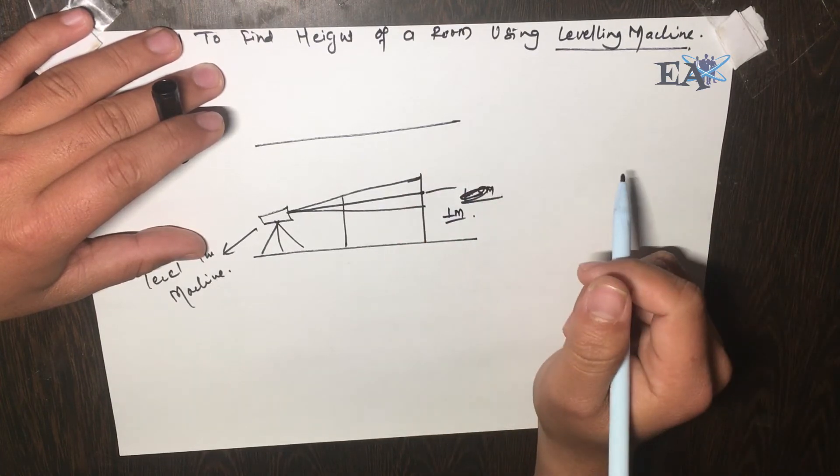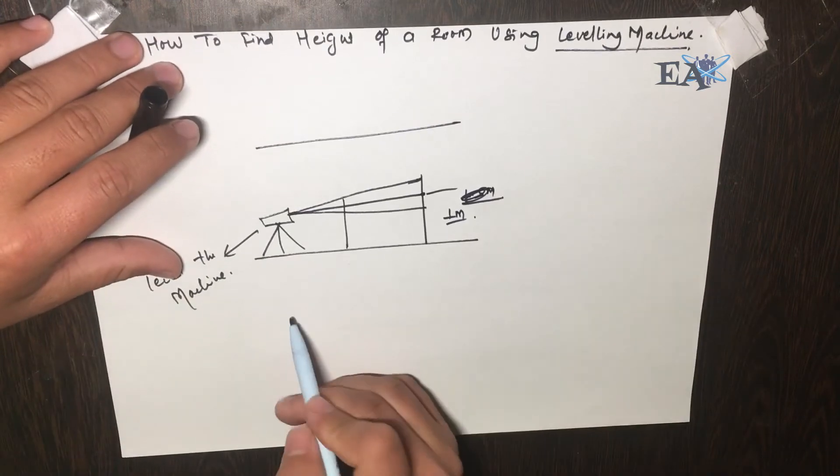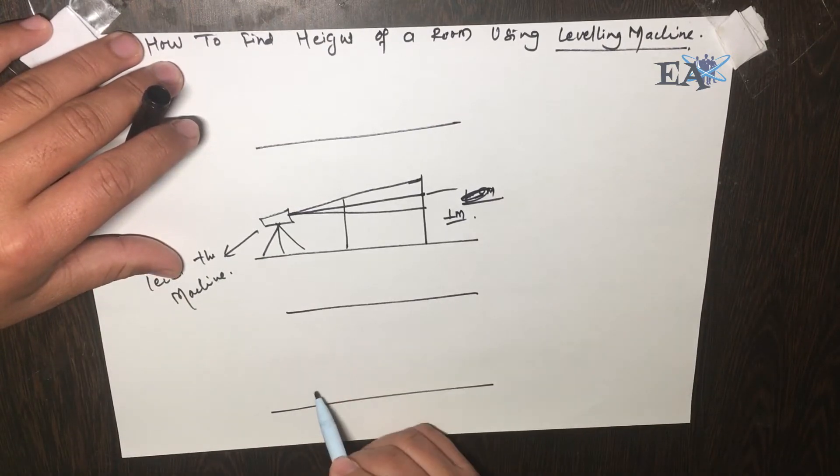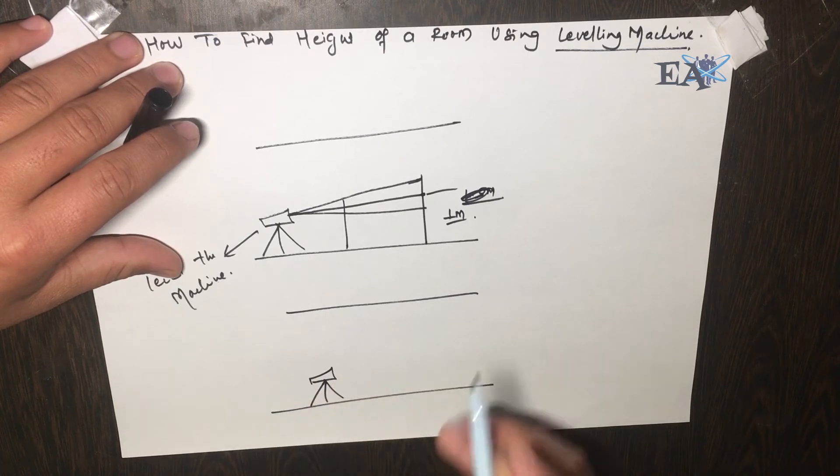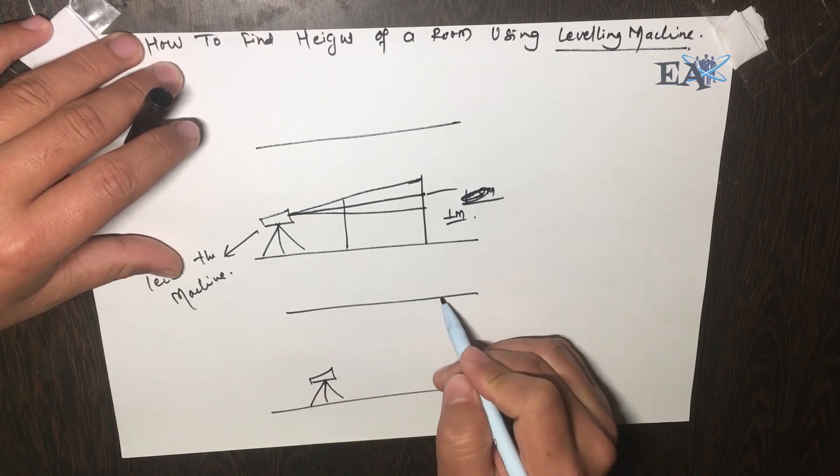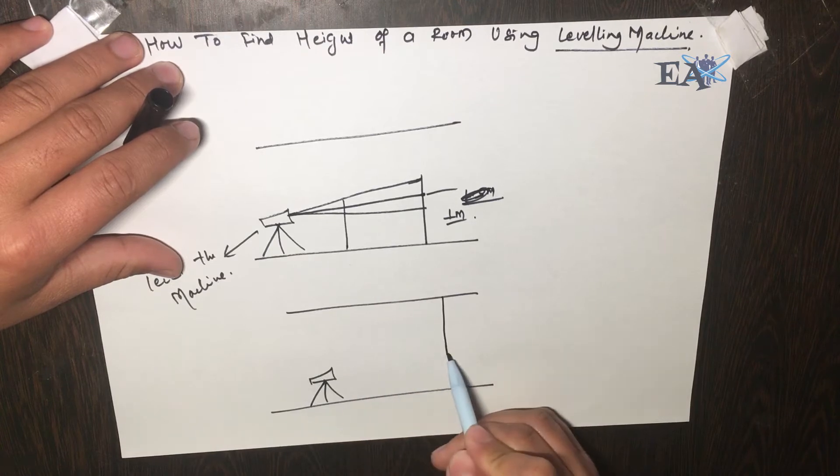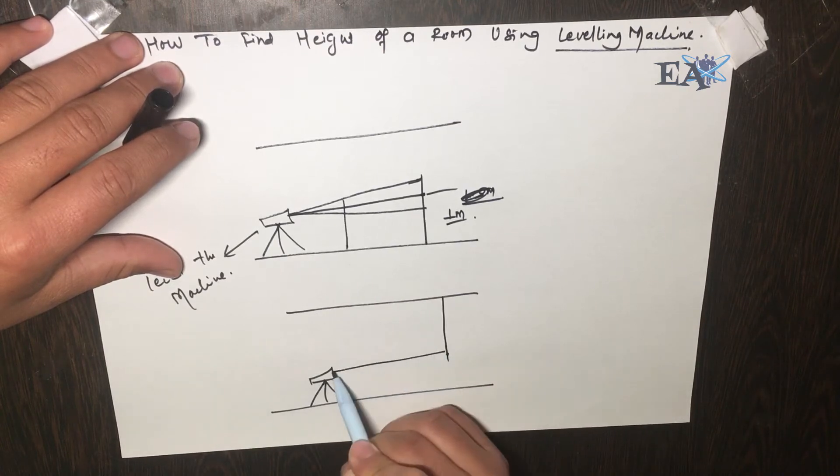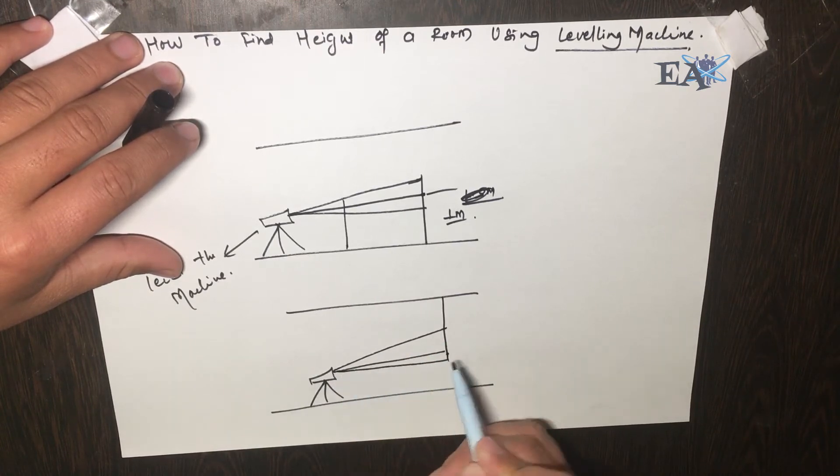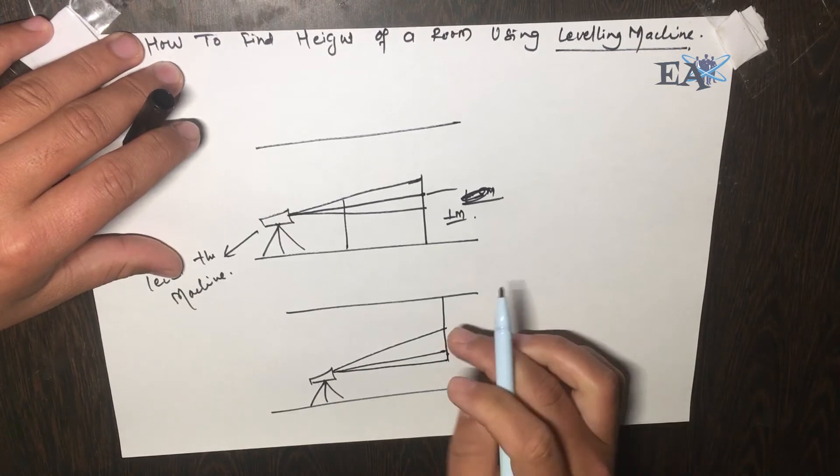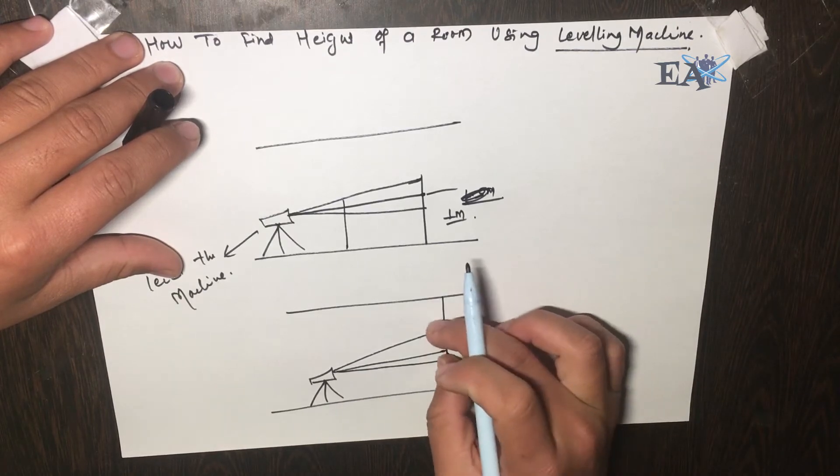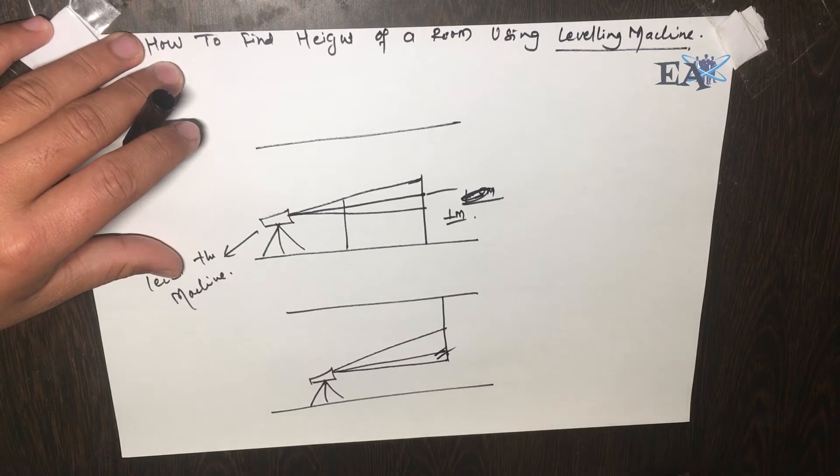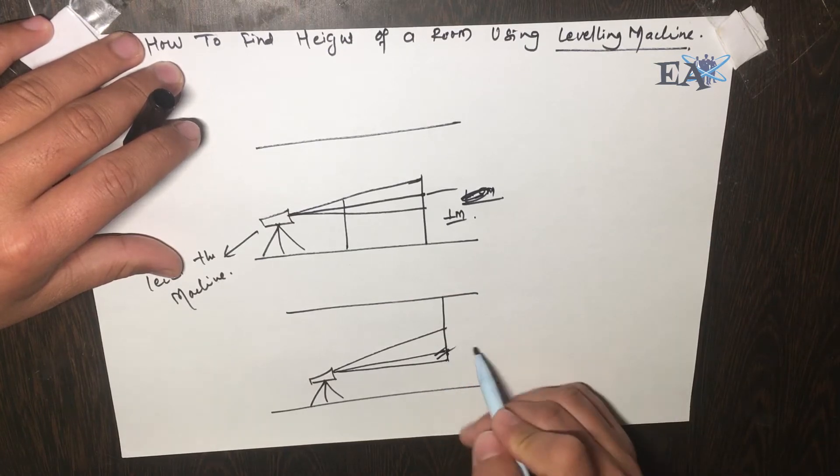Without moving the leveling machine, keep it as it is. After that, you have to place your staff inverted and take another reading. Take the top, middle, and bottom reading. The average of these three should be equal to the first one. Suppose this reading is 2 meters.